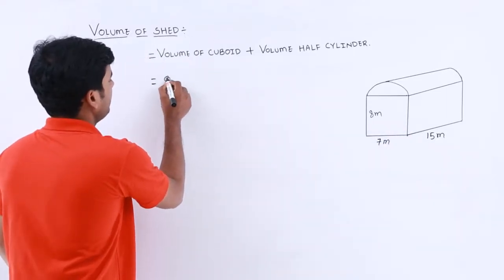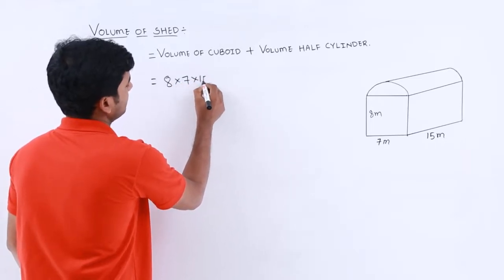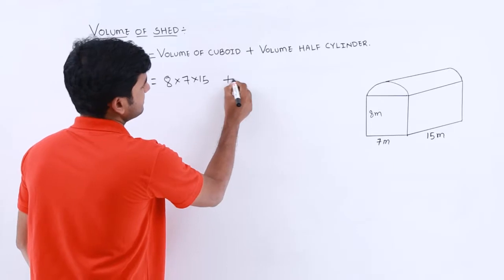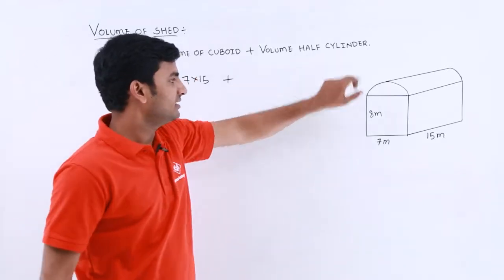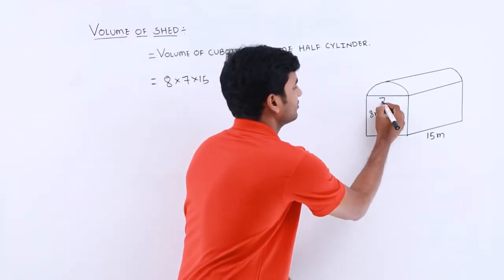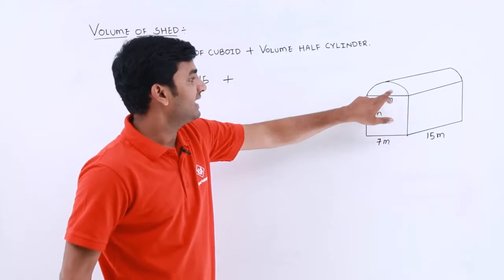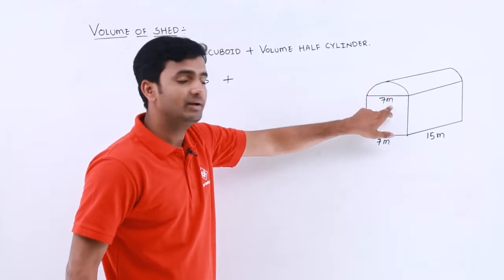Volume of cuboid will be height into breadth into width, that is 8 into 7 into 15, plus volume of half cylinder. Here if you observe carefully, it is 7, so this 7 meter is diameter of the cylinder so half of it will be radius.